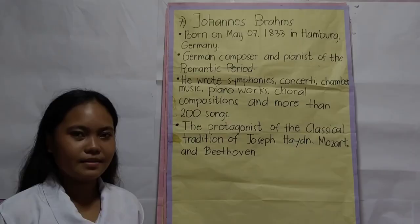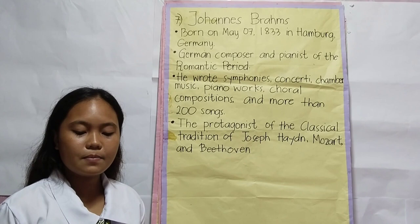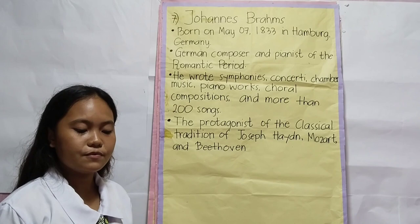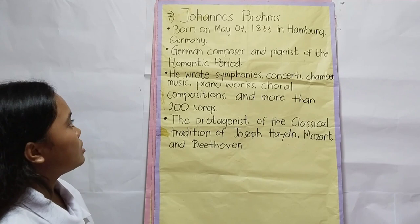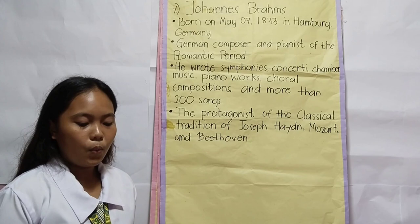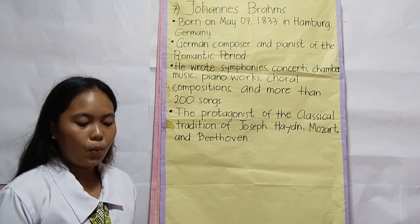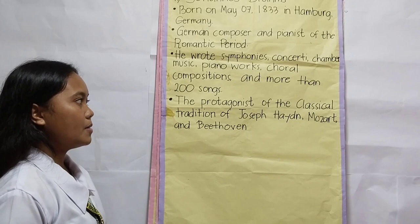Johannes Brahms was born on May 7, 1833 in Hamburg, Germany. He was one of the Romantic period's most revered and popular composers. At a very young age, Brahms was forced to play piano in dance halls to contribute to the family's income as they were very poor. He was also a German composer and pianist of the Romantic period, a master of nearly every type of classical music. Examples of his works include Hungarian Dances, Symphonies No. 1, and Lullaby (Cradle Song). He wrote symphonies, concerti, chamber music, piano works, choral compositions, and more than 200 songs.